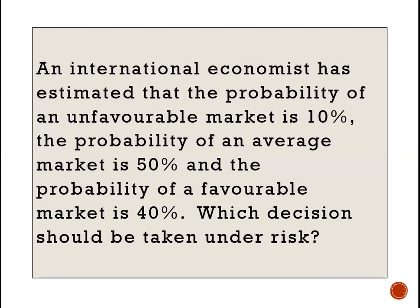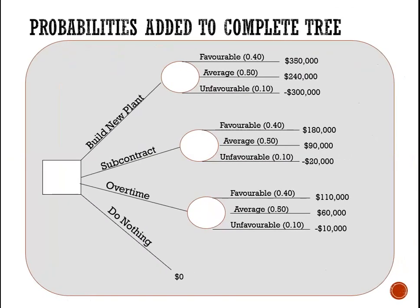Here we are going to add the probabilities. We have 10% for unfavorable, 50% probability for average, and 40% probability for a favorable market. We add these probabilities to our decision tree as before: favorable is 40%, average is 50%, unfavorable is 10%, and we do that for all our outcome nodes. So once we get there, we now have a complete decision tree which shows our decision alternatives, the payoff resulting from each state of nature and choice, and the probabilities of each state of nature.